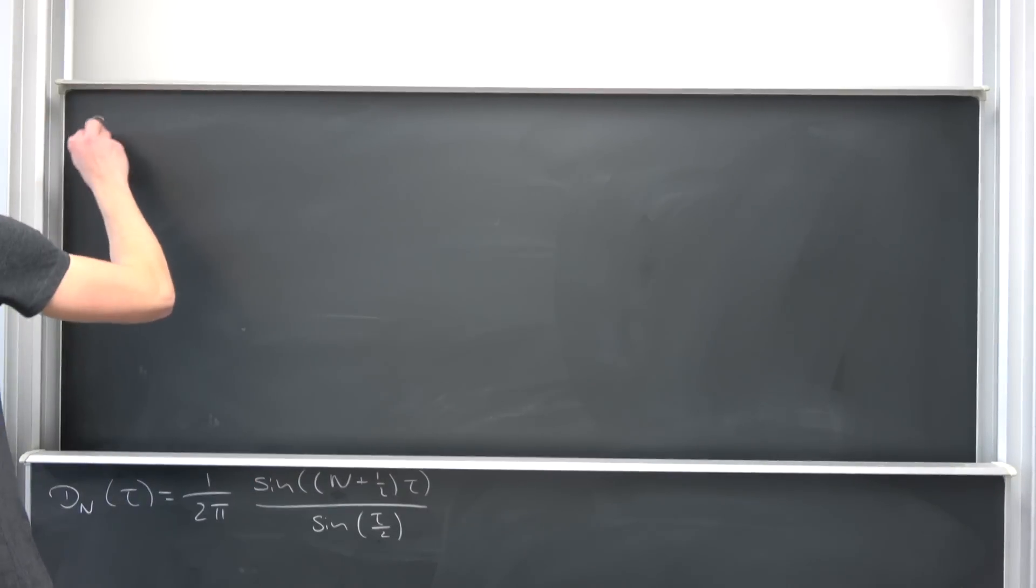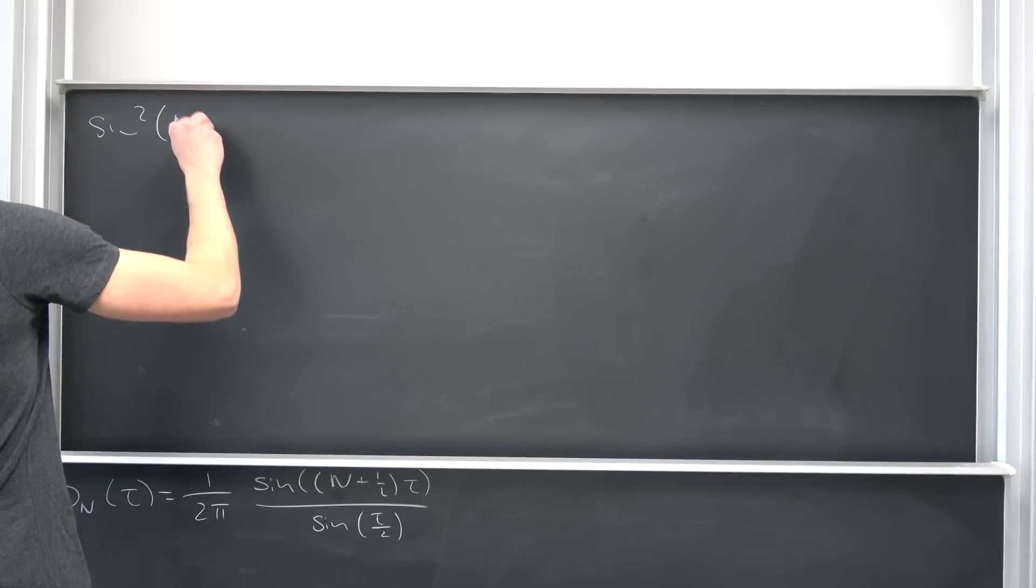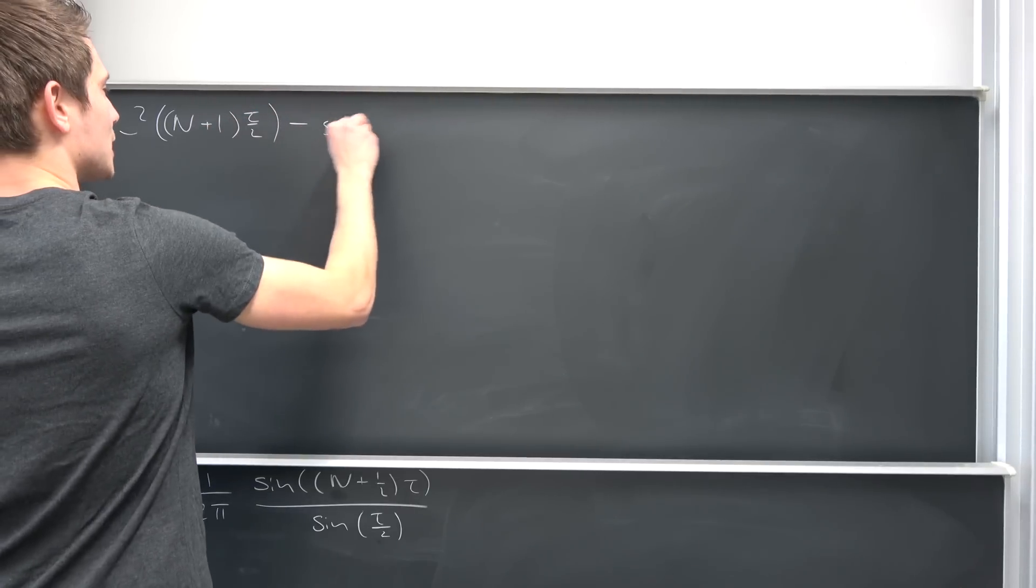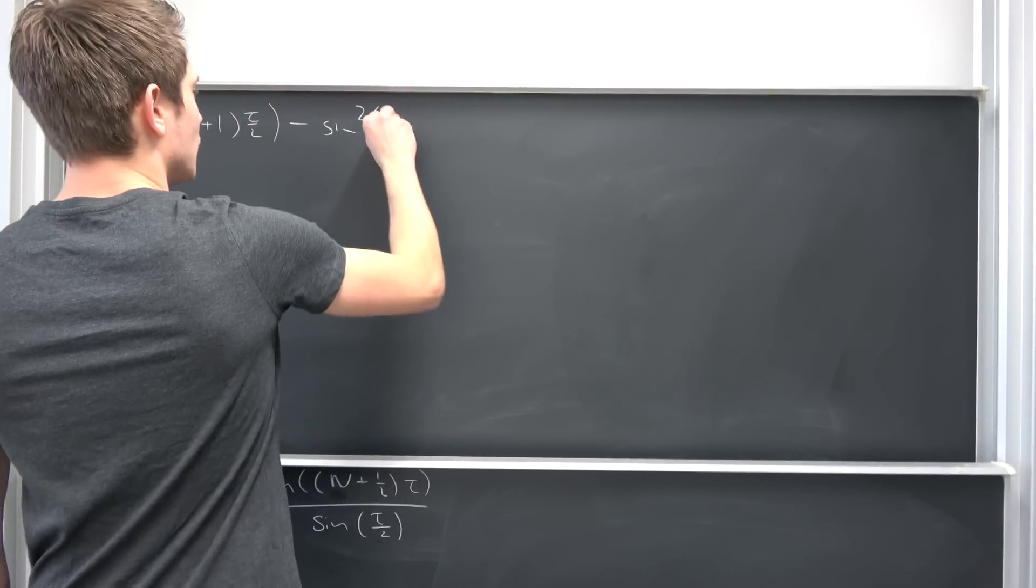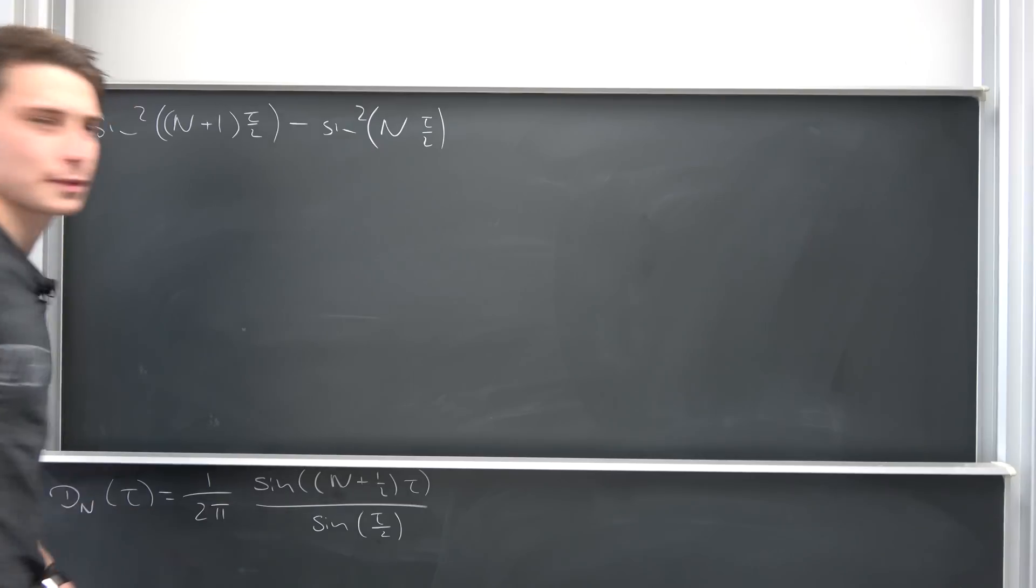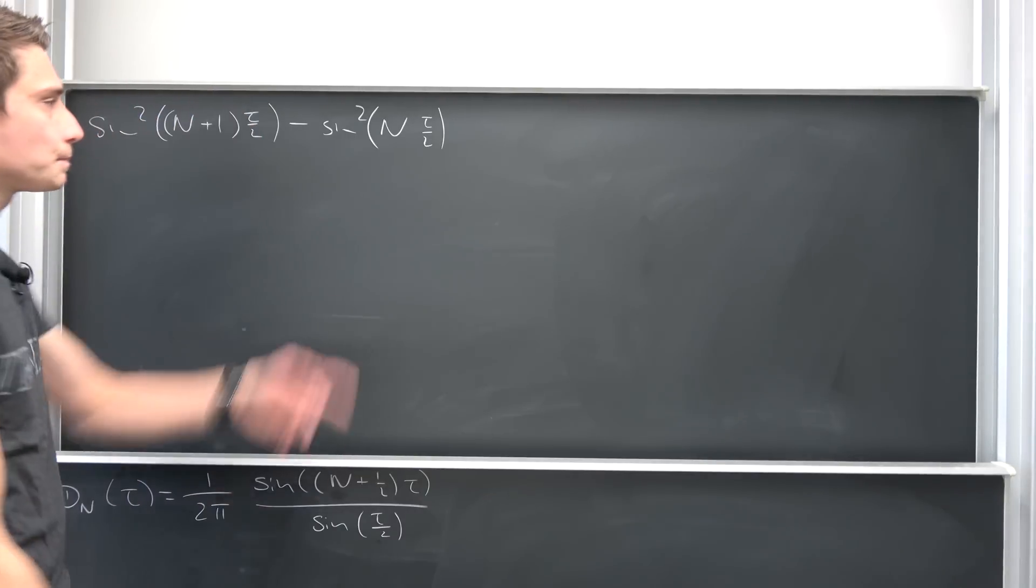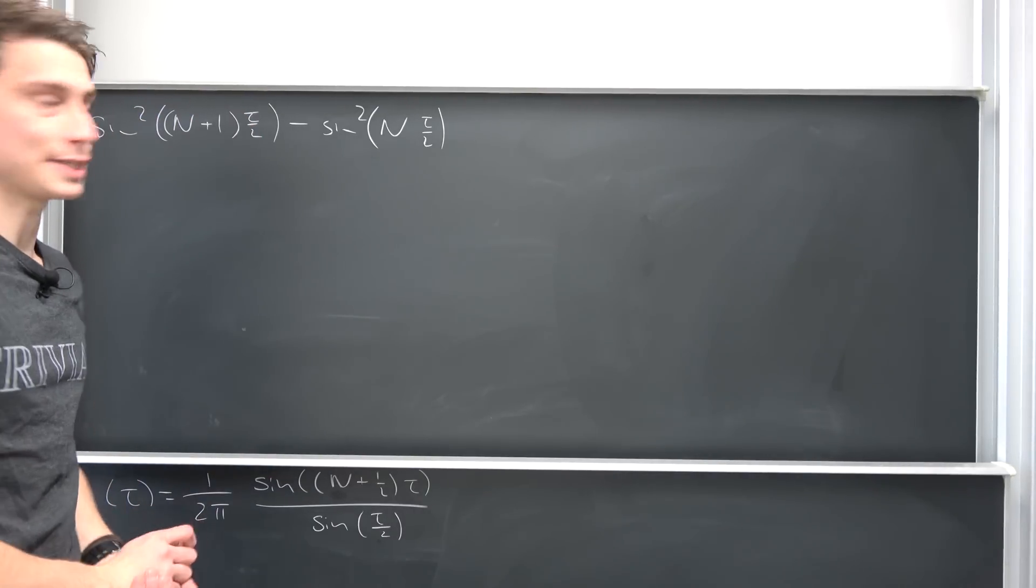So at first I would like to take a look at a pretty different task, namely that the sine squared of (n+1) times tau over 2 minus sine squared of n times tau over 2 is something we are going to derive in a minute. What the hell is this right here?